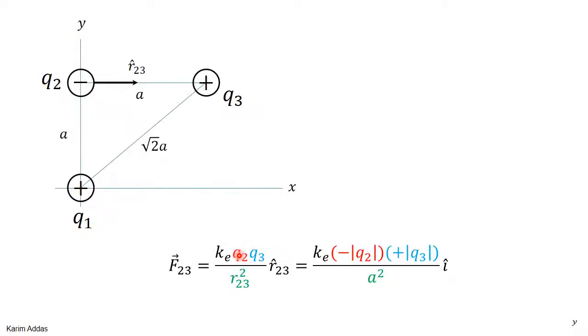So Q2 is a negative charge, so I'll write it as minus magnitude of Q2. Q3 is a positive charge, I'll write it as plus magnitude of Q3. The distance R2,3 is just a, so I'll put a squared. And R hat 2,3, as we said, it's just i hat.